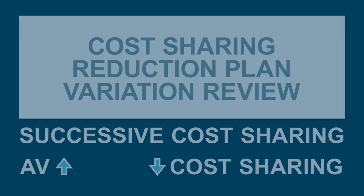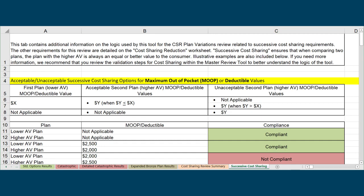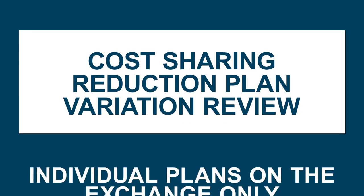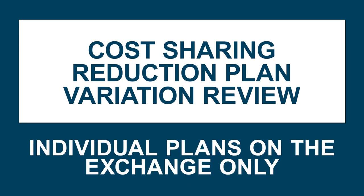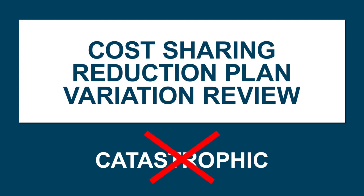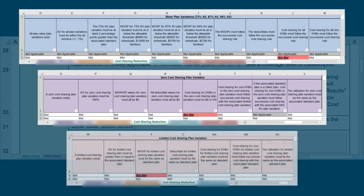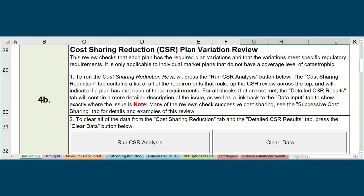For more information on successive cost-sharing requirements, reference the Successive Cost Sharing tab. The CSR Plan Variation Review is only applicable to individual plans on the exchange. CSR requirements do not apply to catastrophic plans. To run the analysis now, click the Run CSR Analysis button in Step 4b. The Cost Sharing Reduction tab outlines the specific requirements each plan variation must meet in order to pass the CSR Plan Variation Review. Once you run the review, plan data will populate the relevant fields on this tab. When you run the CSR Plan Variation Review, the results will populate on the Detailed CSR Results tab.